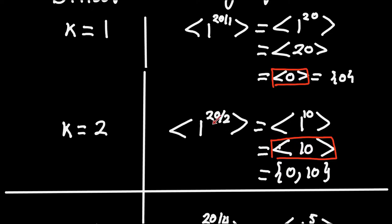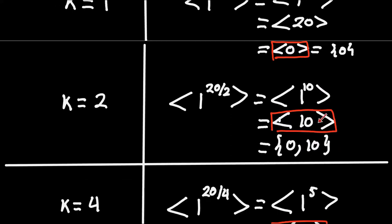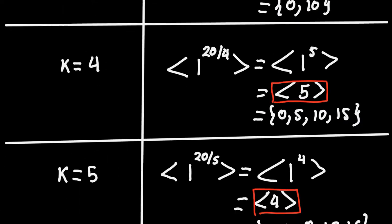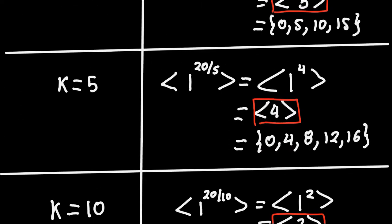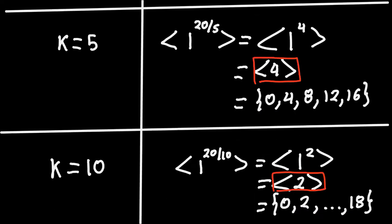For K=2: the generator is 1 to the 20/2, which is 1 operated 10 times, giving 10. The subgroup generated by 10 is {0, 10}, since 10+10=20≡0. For K=4: the generator is 1 to the 20/4, so 1 to the 5th, giving 5. Starting from 5 and adding modulo 20: {0, 5, 10, 15}. For K=5: the generator is 1 to the 20/5, giving 4. Adding 4 modulo 20 gives {0, 4, 8, 12, 16}.